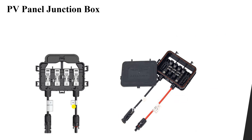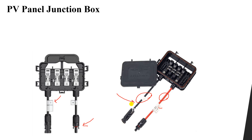Looking at the MC4 connectors, you can see the positive and negative connections — male and female connectors. The positive is usually the red one and the negative is always the black one. The black one is usually related to ground, and the positive represents the live part of the circuit.